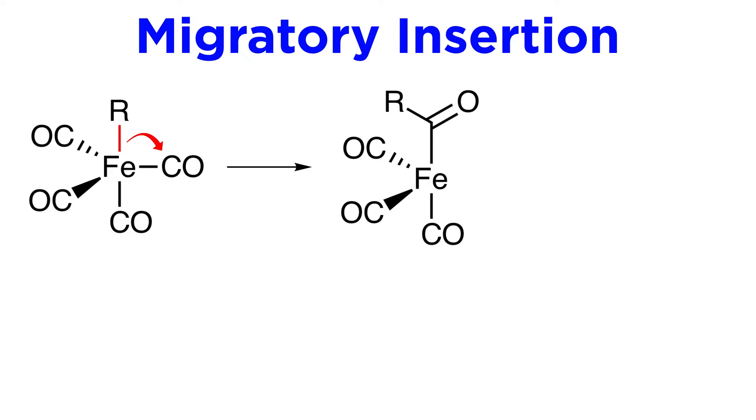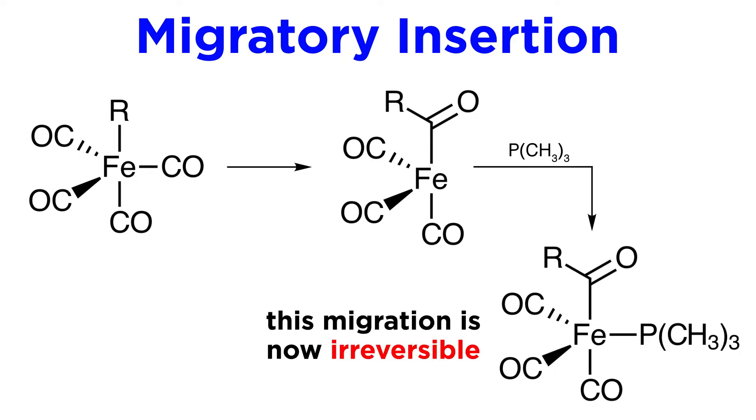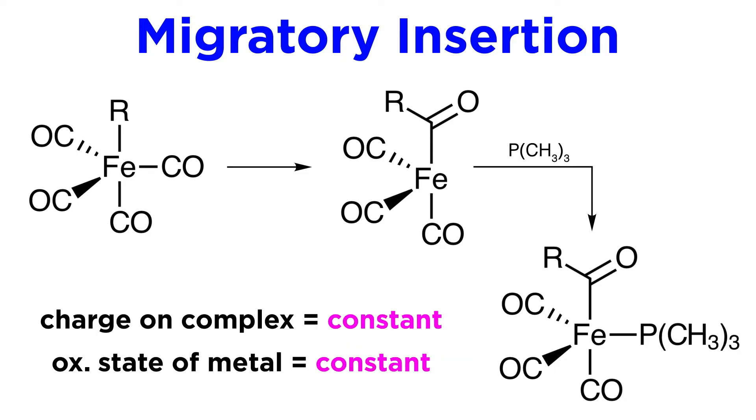While it is actually the case mechanistically that the M-C bond is migrating and attacking the carbonyl in most cases, it is often okay to simplify things conceptually by imagining the carbonyl ligand shifting over. Now let's say that trimethylphosphine coordinates to the vacant site. The insertion is now irreversible. Notice that the charge on the complex and the oxidation state of the metal do not change over either step in this pathway.